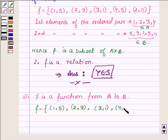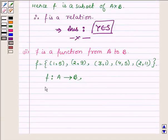Now a function from a set A to B is a specific type of relation for which every element X of A has one and only one image Y in set B.